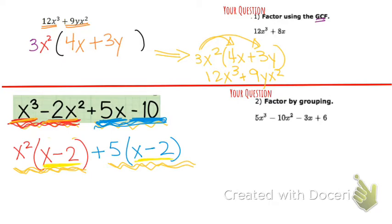So I can pull an x minus 2 out of this term and an x minus 2 out of this term. So if I take an x minus 2 out of each one, if I divide this by x minus 2, I'm left with x squared. If I divide this by x minus 2, I'm left with a plus 5.